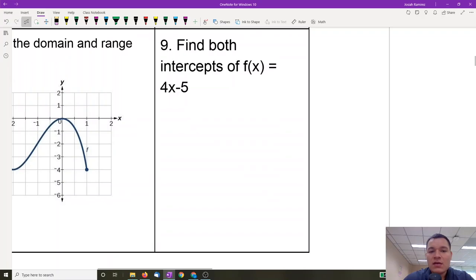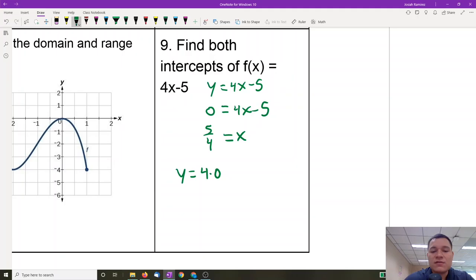Do something similar right here. Find both intercepts, so that means one at a time, we're going to solve 4x - 5. We're going to put 0 for y. You're going to solve this one for x. And you're going to put 4 times 0 to solve for the y-intercept. Oh well, it's just going to be y equals negative 5. So as an ordered pair, this one would be (0, -5). This one is (5/4, 0).